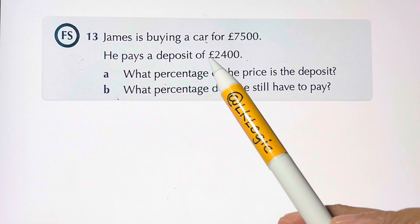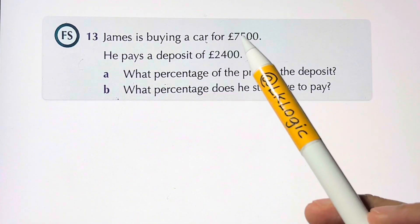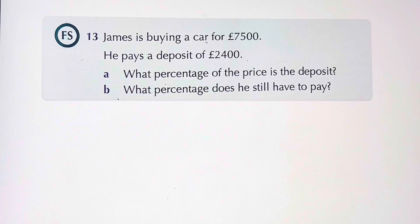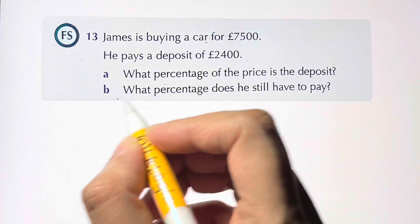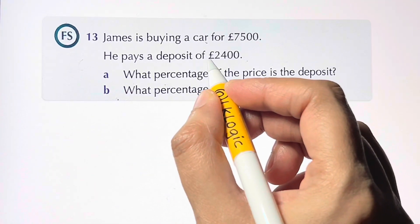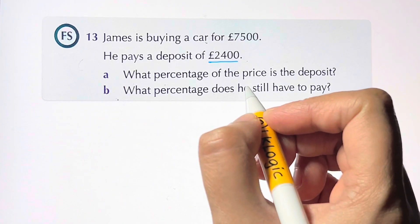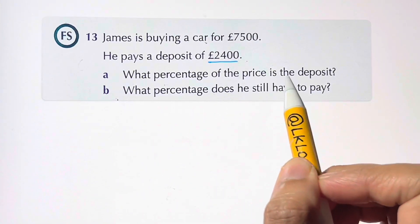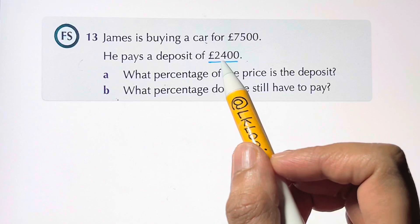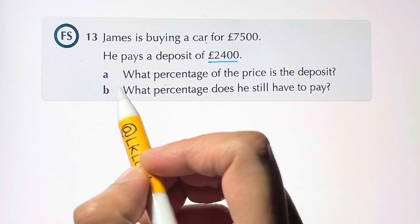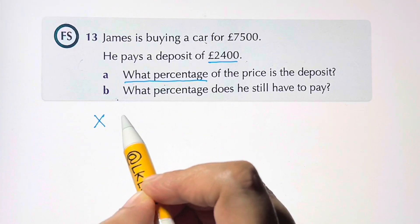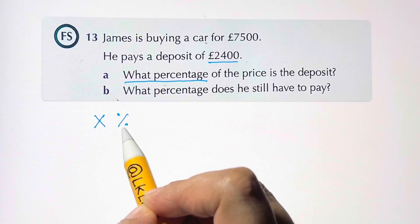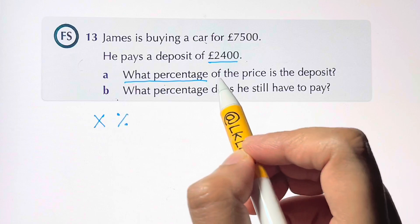To find what percentage of the price the deposit is, we form a simple equation. The deposit is two thousand four hundred. We let the unknown percentage be X, so X percent of the price equals the deposit.